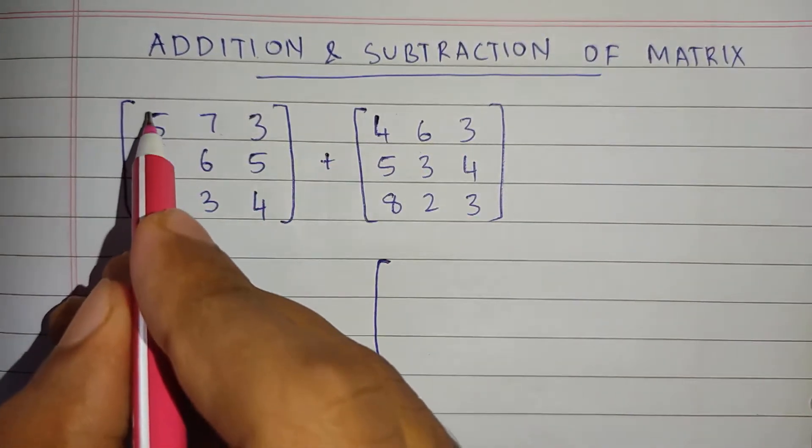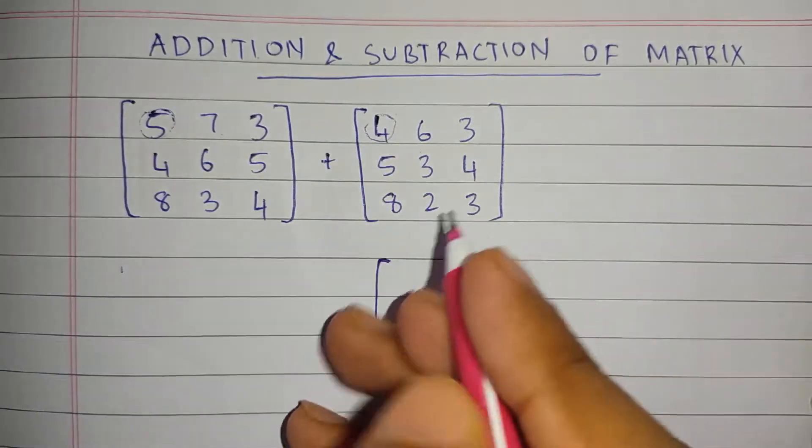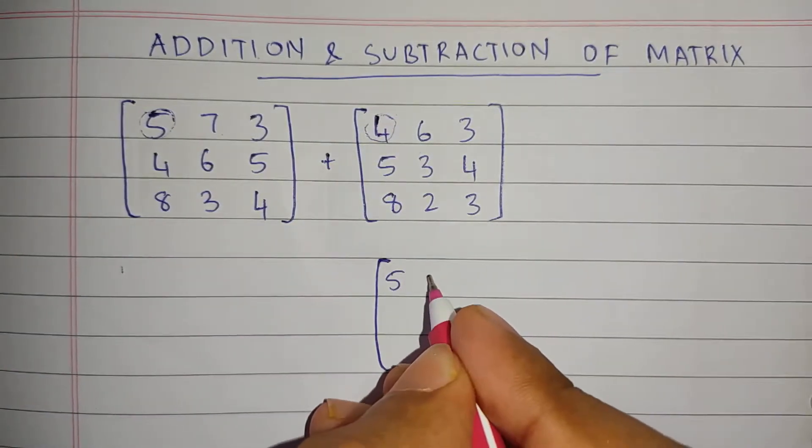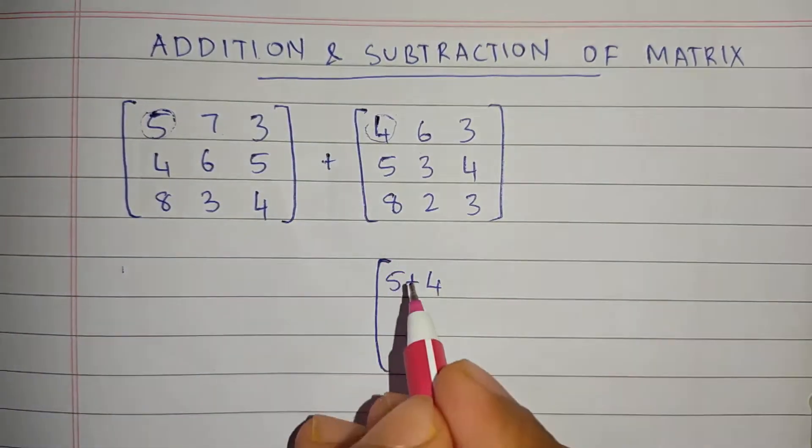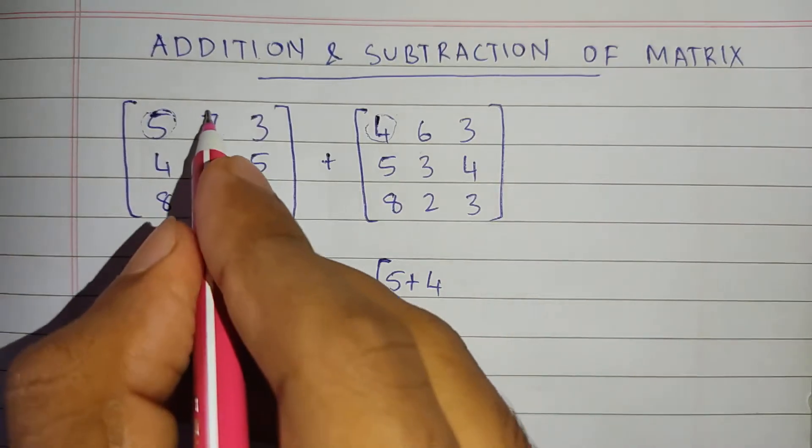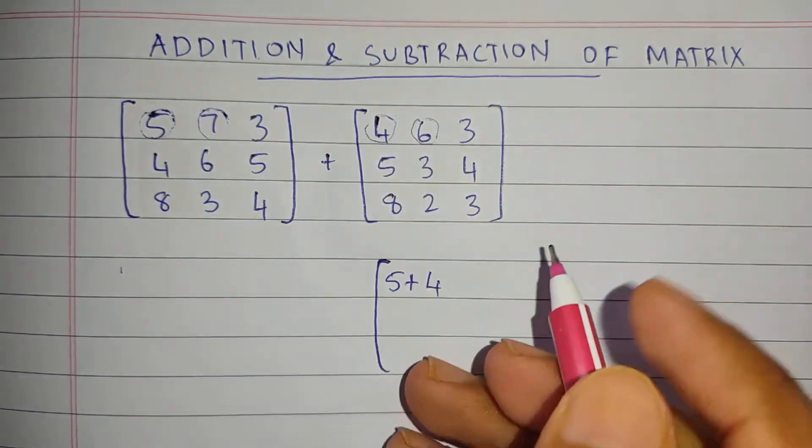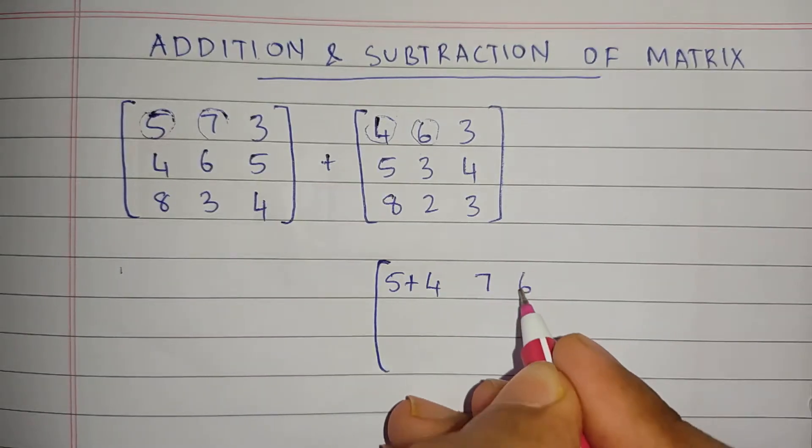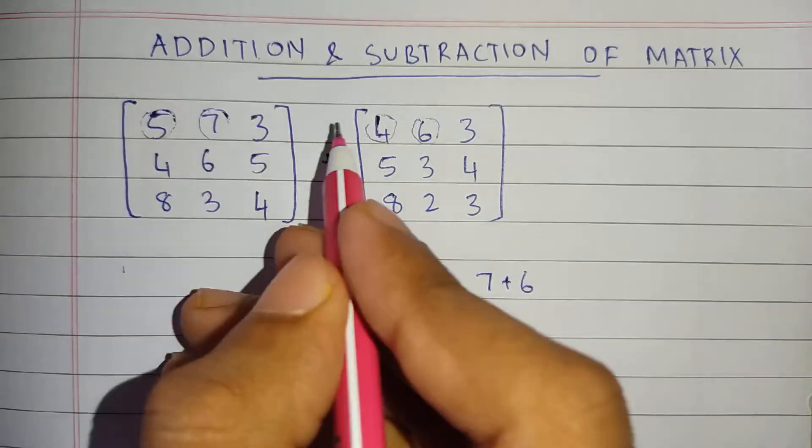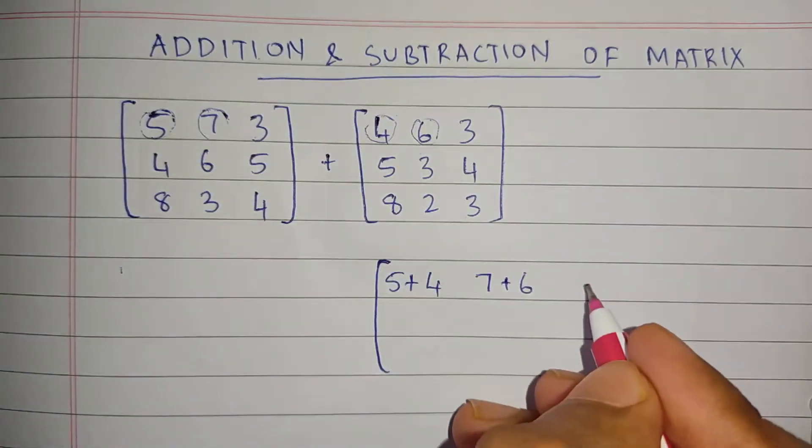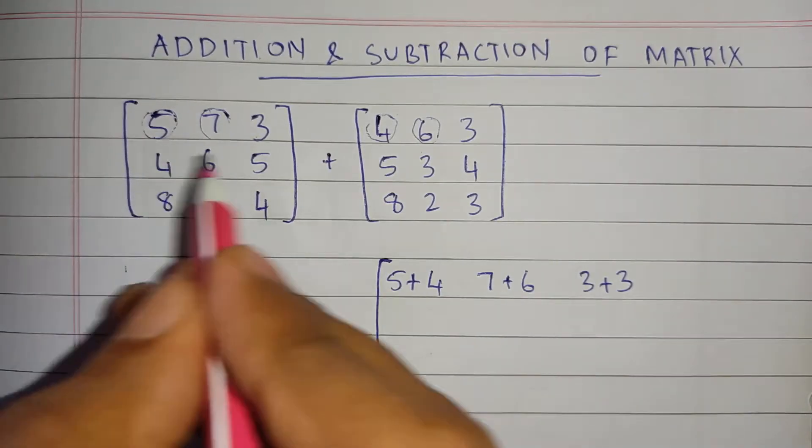The first step: take the first element in the first matrix and the first element in the second matrix, 5 and 4, and put the plus sign. Similarly, take the second element of the first matrix and the second element of the second matrix, 7 and 6, and put the plus sign. Similarly do all: 3 plus 3, 4 plus 5.